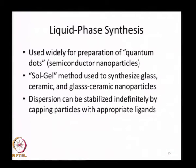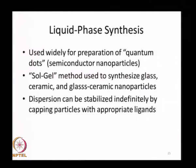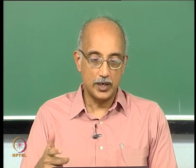Liquid phase synthesis — the most common example being the Solgel method — is used for preparation of quantum dots, which are semiconductor nano particles, as well as glass ceramic nano particles. The Solgel method is actually a combination of bottom-up and top-down: you make a powder using a bottom-up approach but then grind it down to nano dimensions using a top-down approach. Dispersion can be stabilized by capping the particles with appropriate ligands to prevent re-agglomeration.